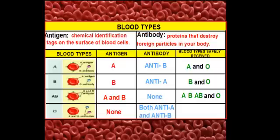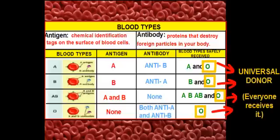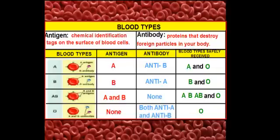O blood isn't as flexible as AB because O blood has anti-A and anti-B antibodies, meaning anything with an A or B antigen will be destroyed. So a person with O blood can only receive O. That's how blood typing works. That concludes tonight's podcast, boys and girls. Thank you for your time.